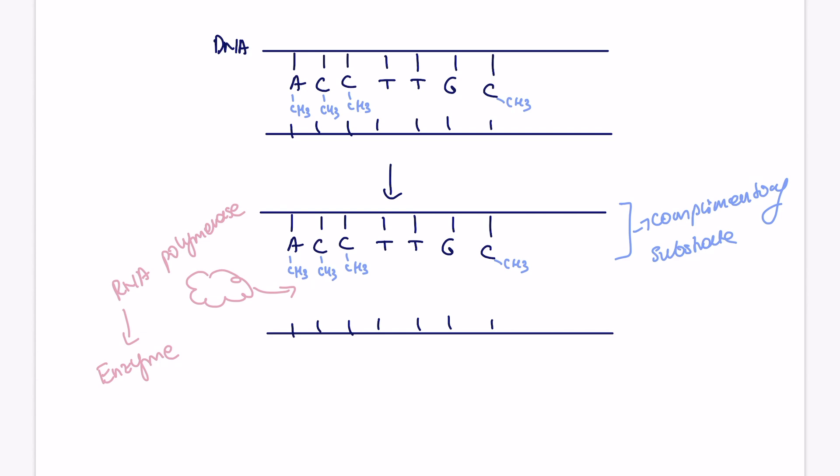However, we have just added extra methyl groups, which should probably technically not be there for transcription. So that means that the DNA becomes less accessible for RNA polymerase to bind. Well, if DNA is less accessible for RNA polymerase to bind, and specifically to the promoter sequence, this means that the transcription rate will decrease. And this works vice versa.